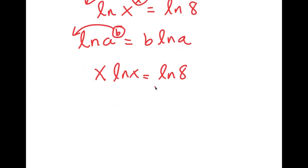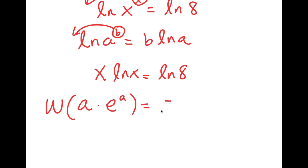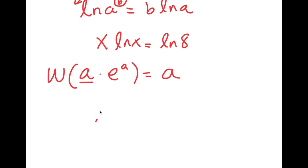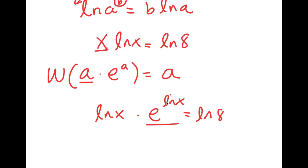From here, I'm going to use another formula that states that if I have something in the form W of a times e to the power of a, this is equal to a. This is something known as the Lambert W formula. So if I take the W of something in the form a times e to the power of a, it's going to equal a. In this case, I'm going to rewrite this as ln x times e to the power of ln x is equal to ln 8, because x is the same thing as e to the power of ln x.